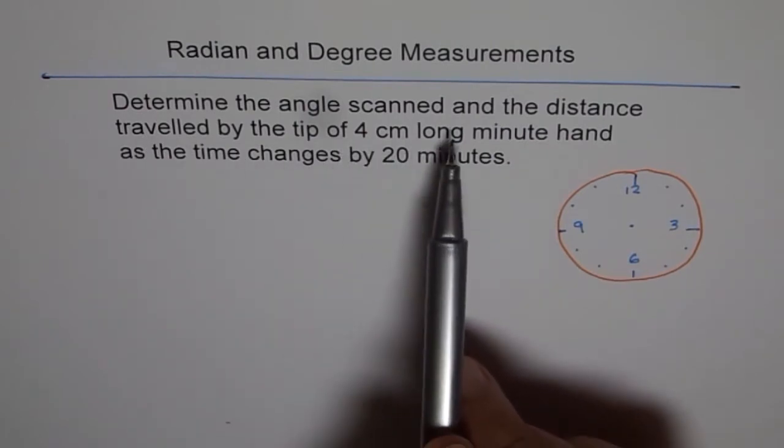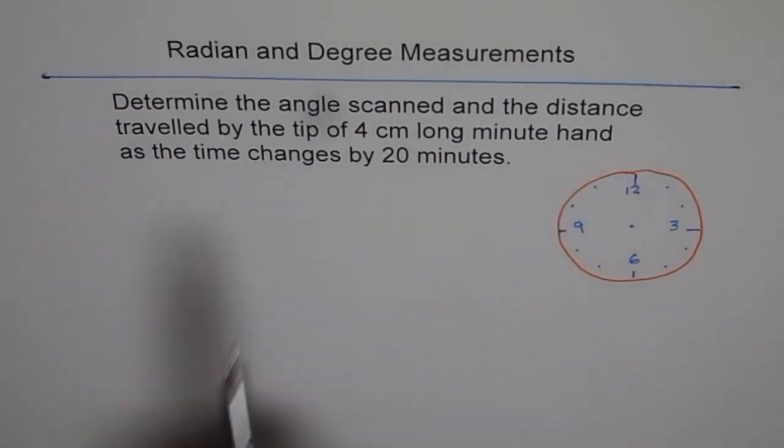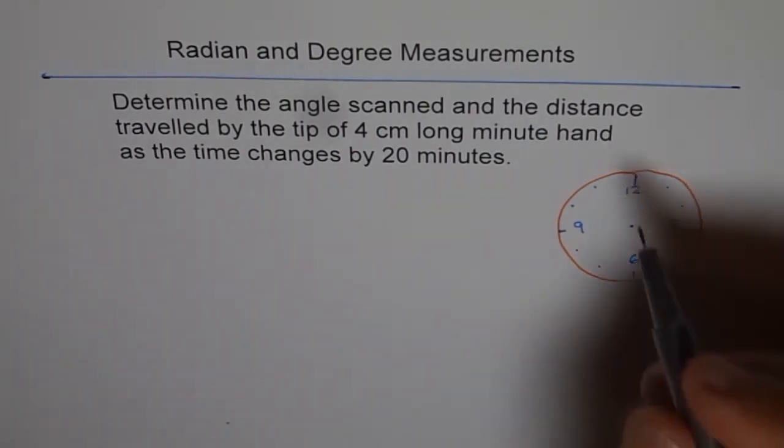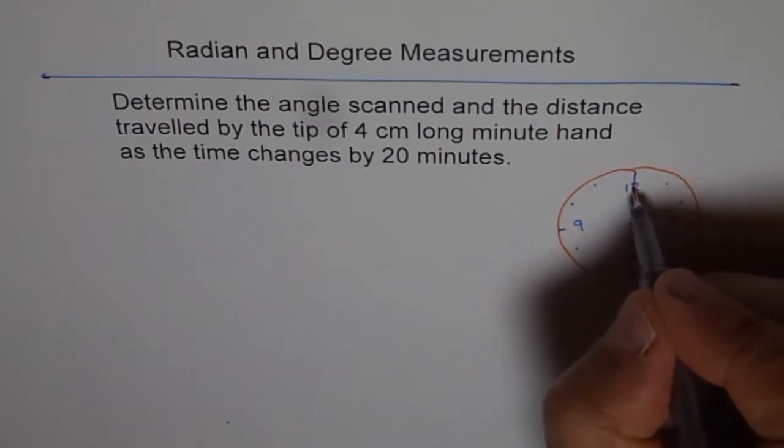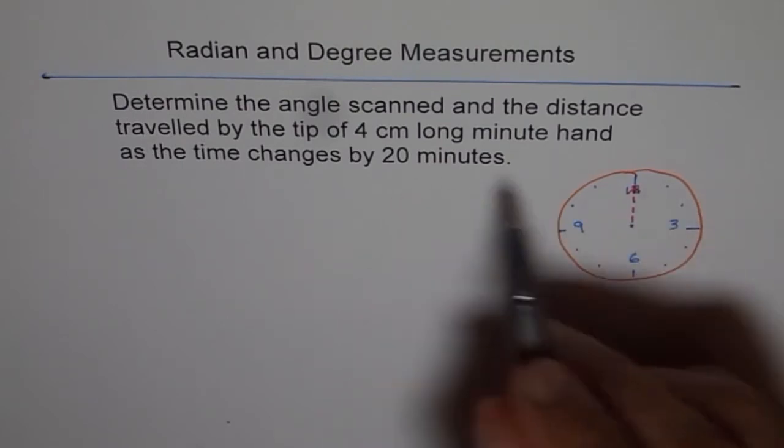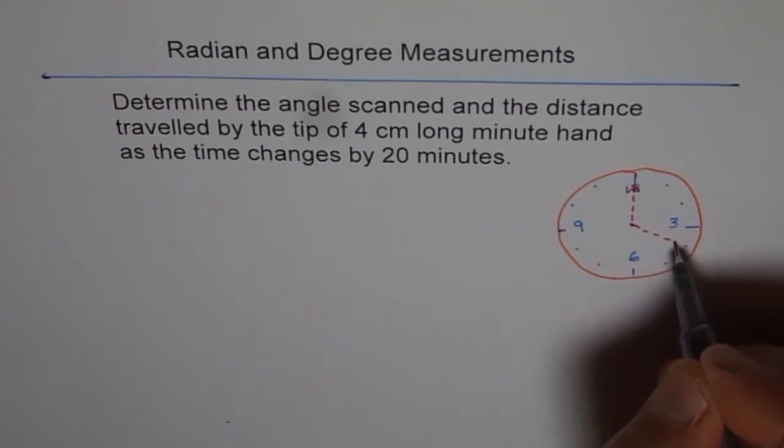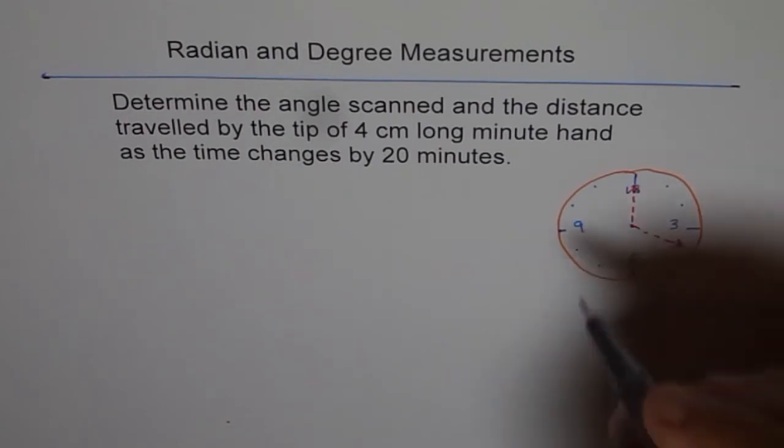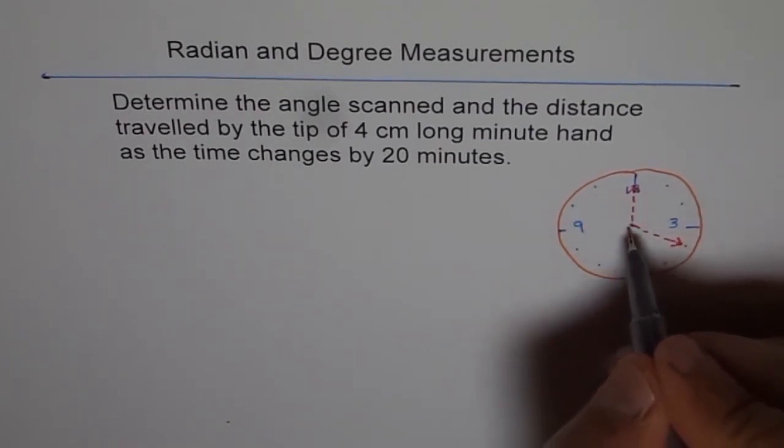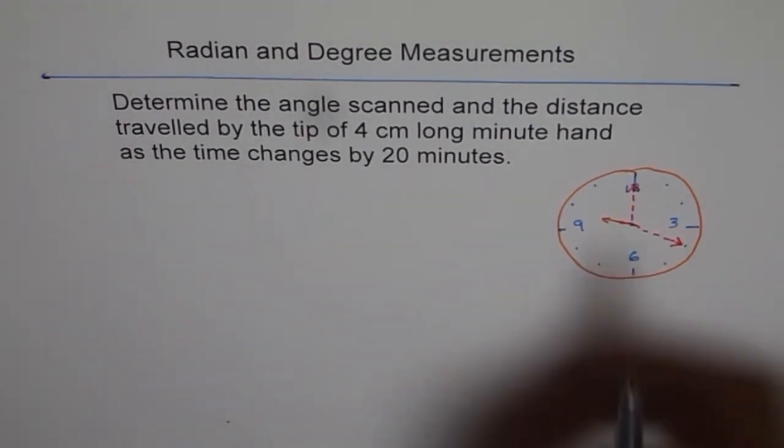Determine the angle scanned and the distance traveled by the tip of 4 cm long minute hand. So, let's assume that our minute hand is starting here and that's 4 cm long and after 20 minutes this is going to reach here. And meanwhile, let's assume that our hand was somewhere around this place. So, let's just draw it like this.